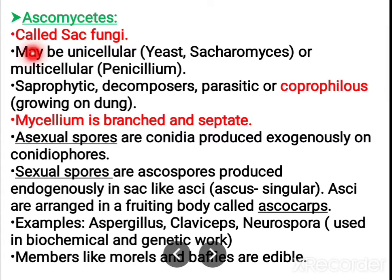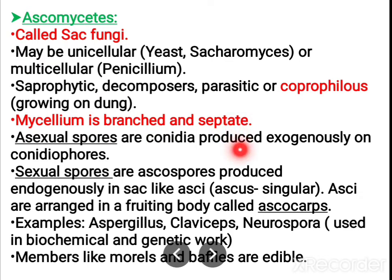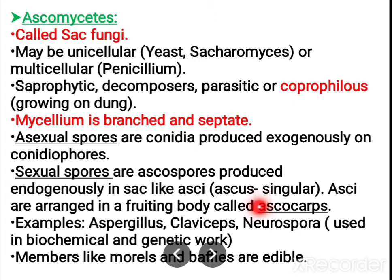Next is ascomycetes, called sac fungi. They can be unicellular, example yeast or Saccharomyces, or multicellular, example Penicillium. They are saprophytic, decomposers, parasitic, or coprophilous — growing upon dung. The mycelium is branched and septate. Asexual spores are called conidia and are produced exogenously on conidiophores. Sexual spores are called ascospores — that is why they are called ascomycetes. Ascospores are formed endogenously in a sac-like structure called an ascus (plural: asci), which are arranged in a fruiting body called the ascocarp.